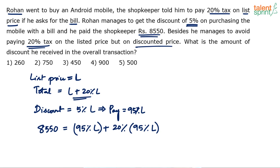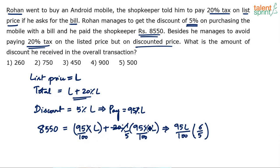95 can cancel out 8,550 — 9,500 minus 950 is 8,550, so it goes 90 times. We can write this as 95/100 times L, times (1 + 1/5), which is 6/5. Taking 95L/100 common, we have 1 plus 1/5 which is 6/5. This equals 8,550. 95 goes 90 times; 15 goes into the denominator 15 times — 15 × 5 = 75, and the list price comes out to be ₹7,500.